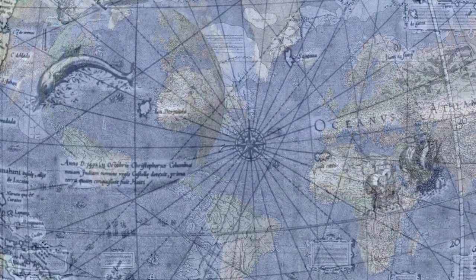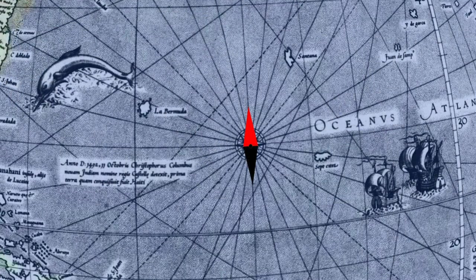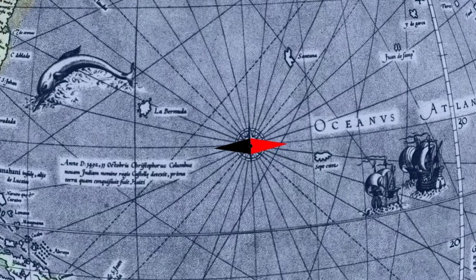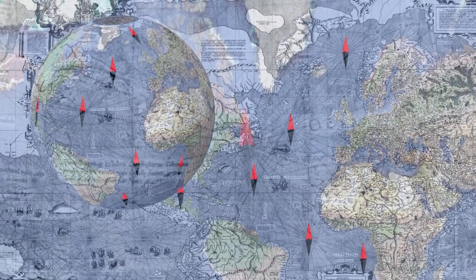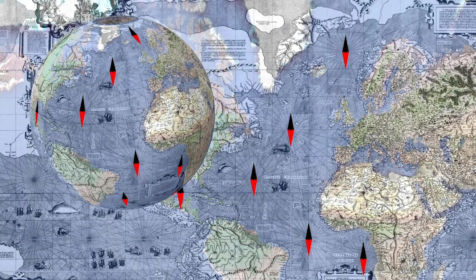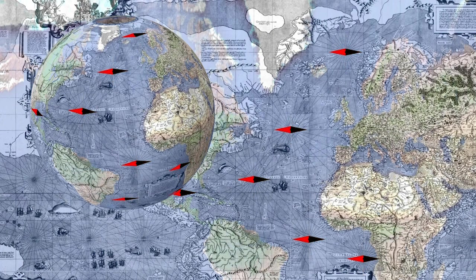Thus, the cardinal directions, north, south, east, and west, always appear on the map as up, down, right, and left.